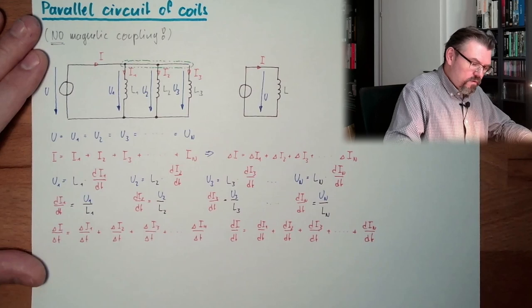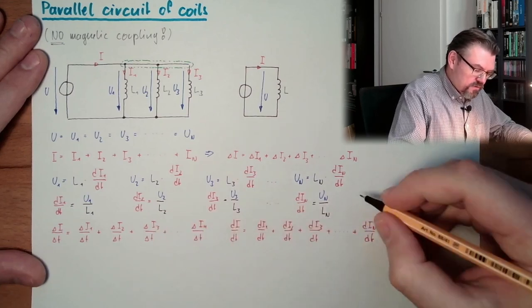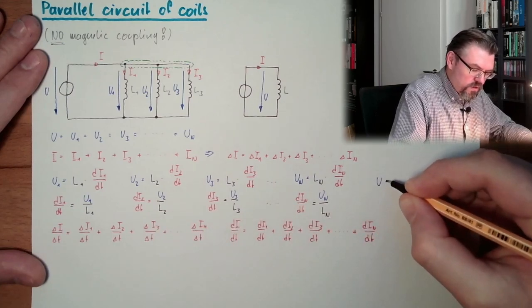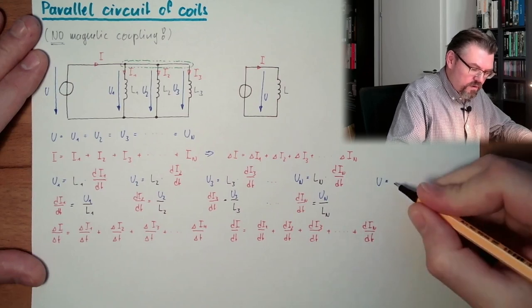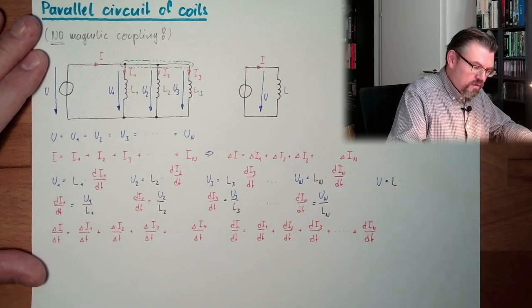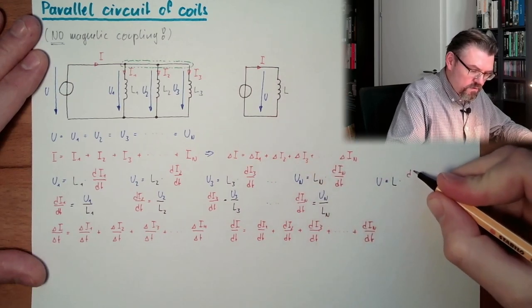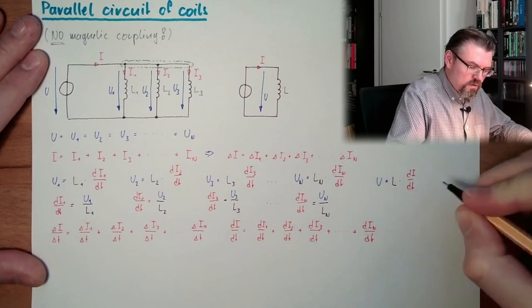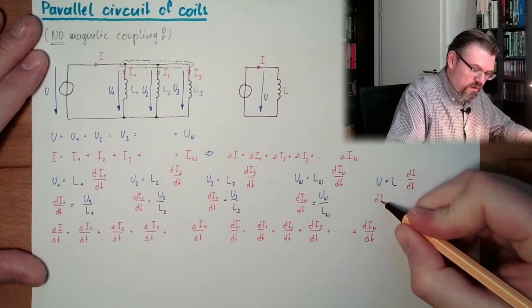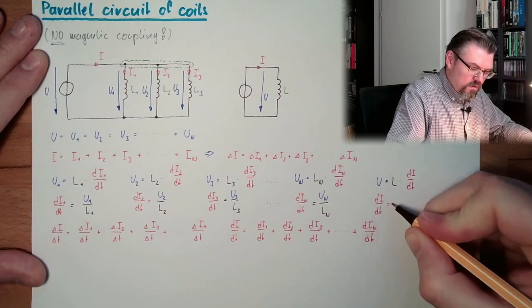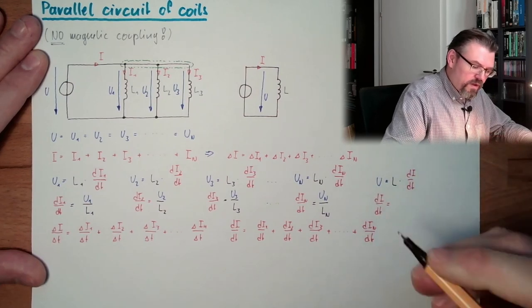I'm writing, because, of course, the U equals L times dI dt, so my dI dt equals U divided by L.